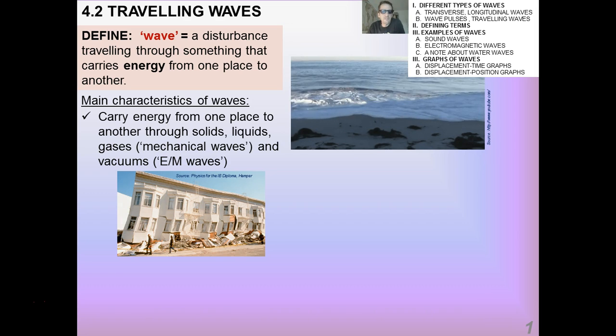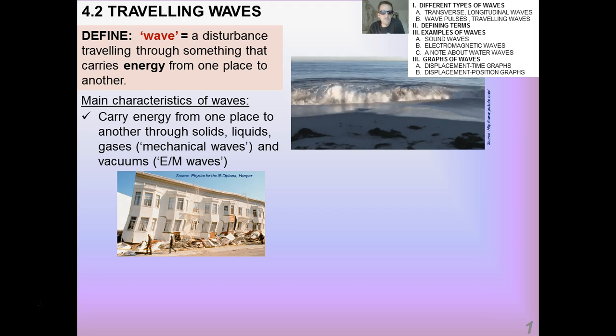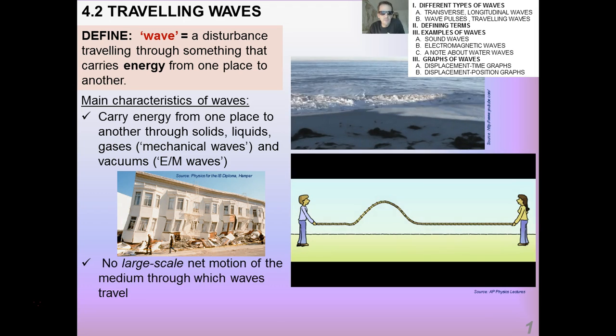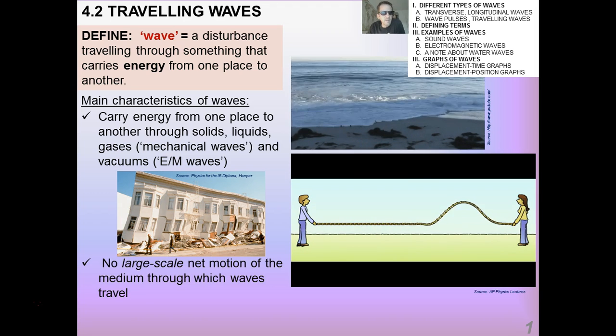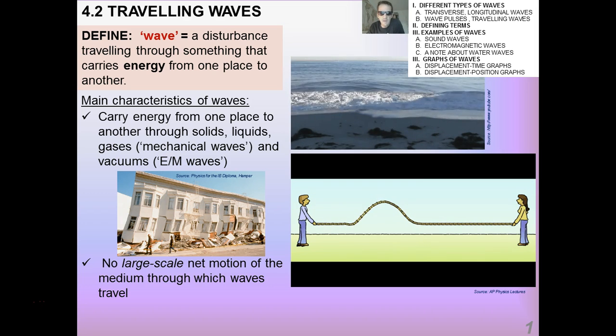The main characteristics of waves is of course they carry energy from one place to another through any substance, and in fact electromagnetic waves don't even need a material or substance through which to move. They can move through a vacuum. The other thing that's very important about waves is that there's no large scale net motion of the medium through which the waves travel.